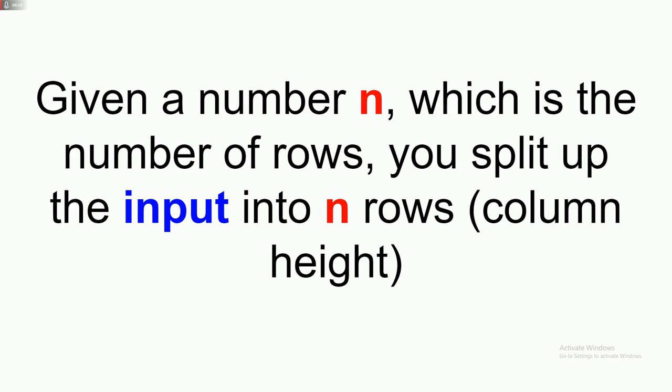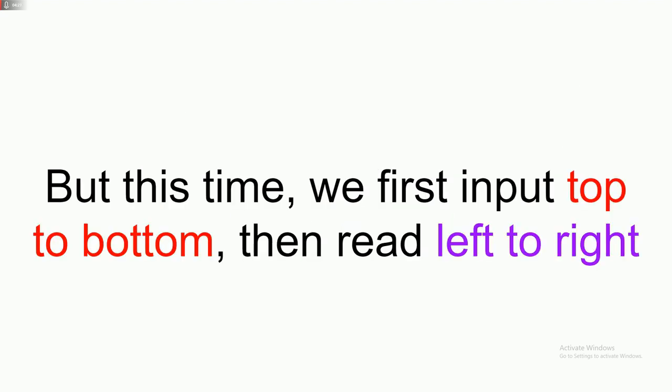Decrypting. So how does it work? We do the absolute reverse. So we're given a number n, which is the number of rows, and we split it into input into n rows, which is also the column height. This is the exact same thing as before, except this time we're going to first input top to bottom, and then we're going to read left to right.